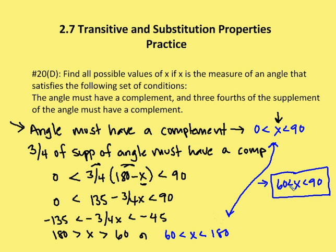Since X must satisfy both restrictions — between 0 and 90, and between 60 and 180 — we conclude that X is between 60 and 90 degrees. Those are the restrictions on X.